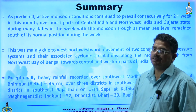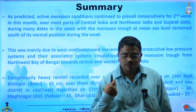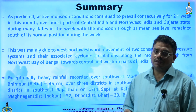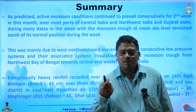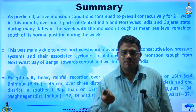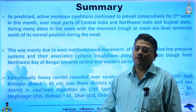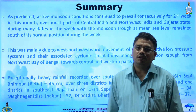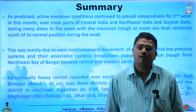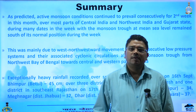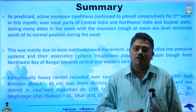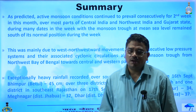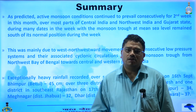We have mentioned some points in the form of a summary. Under the influence of two low pressure areas and their movement, especially Odisha, Chhattisgarh, Madhya Pradesh, Rajasthan and Gujarat received a good amount of rainfall with extremely high rainfall activity, and exceptionally heavy rainfall events on 16th and 17th over southwest Madhya Pradesh and southeast Rajasthan. Because of this low pressure area, the seasonal monsoon trough remains south of its normal position.